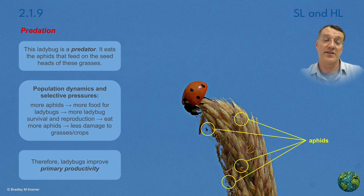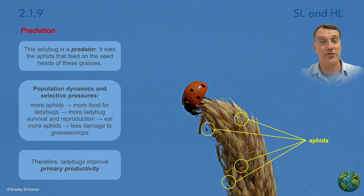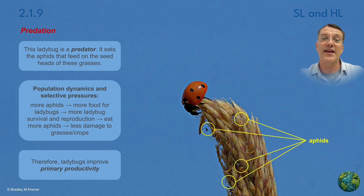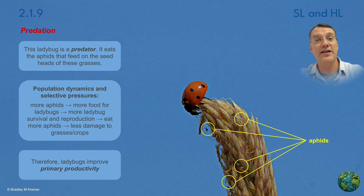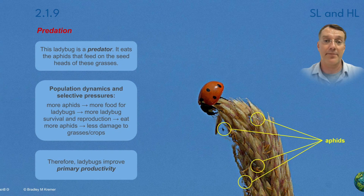Predation, or hunting, is when one consumer organism eats another consumer organism. In the example shown here, ladybugs are consuming aphids. Both are consumers, and when ladybugs eat aphids, they help regulate the aphid population, which actually benefits the plants because the aphids feed on plant sap.